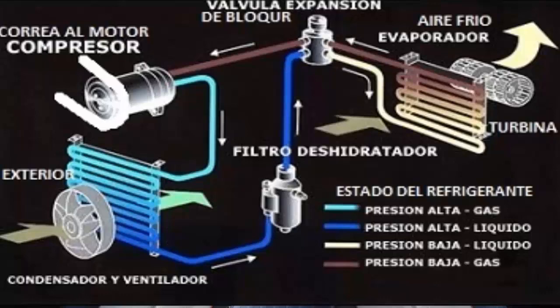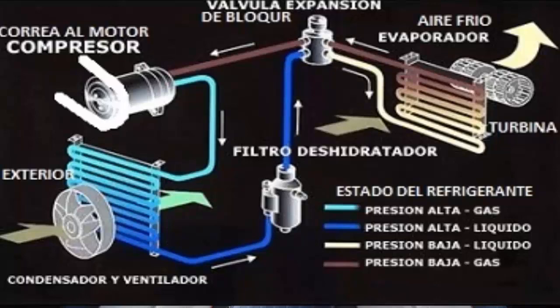If you have pressure gauges, the readings should be around 35 psi on the blue gauge and about 180 psi on the red gauge, with the air conditioning on and without accelerating the engine.